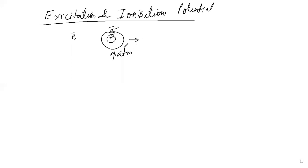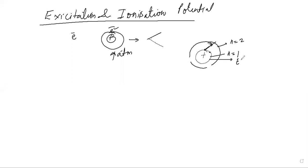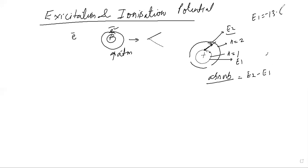When an atom absorbs energy, two things can happen. First, the electron can jump from an inner orbit to an outer orbit. Suppose the first orbit is n=1 and the second orbit is n=2. The energy at n=1 is E1 and at n=2 is E2. To move from inner to outer orbit, the electron needs to absorb energy equal to E2 minus E1.